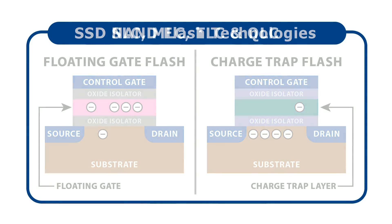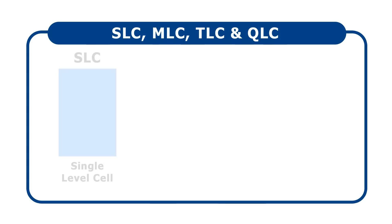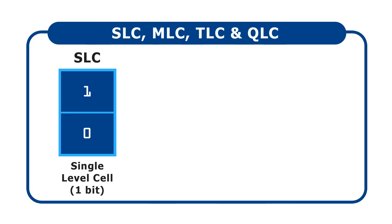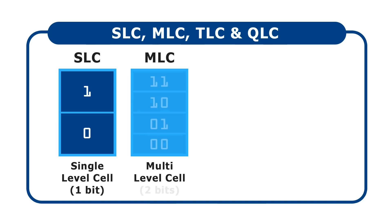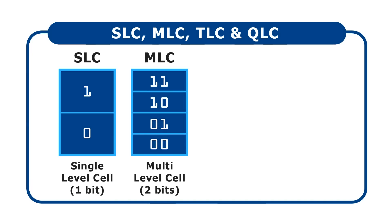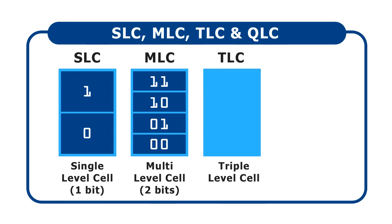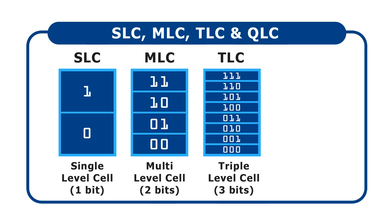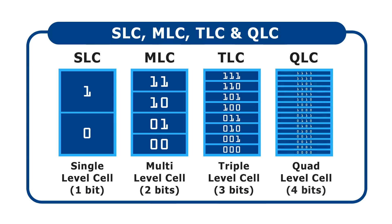How does this relate to QLC and TLC SSDs? The first solid state drives were SLC, or Single Level Cell, and used each memory cell to store just one bit of data, requiring only two possible states: fully programmed or fully erased. Next came Multi-Level Cell or MLC SSDs, storing two bits per cell and requiring four states. Triple-Level Cell or TLC SSDs store three bits per cell and distinguish eight states. And Quad-Level Cell or QLC drives store four bits per cell, requiring 16 program-erase levels.